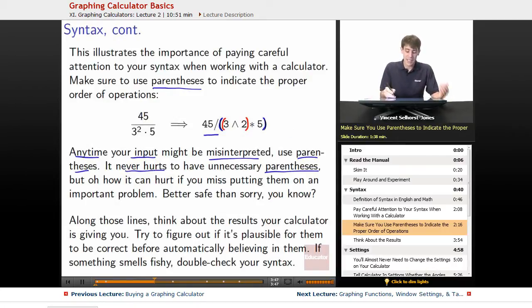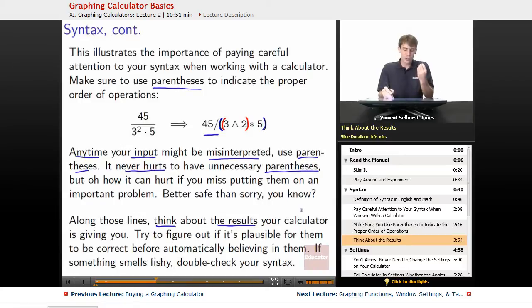So along those lines, think about the results your calculator is giving you. You don't want to just blindly assume, because my calculator told me it's got to be right. You want to try to figure out, is this plausible? Is this vaguely reasonable for me to get these numbers out of it? If we did 45 divided by 3 squared times 5, and it came out as 25, we should go, well, 45 divided by at least 9, 45 divided by something around 10, that's going to be way less than 25, so it sets off an alarm bell. We might not know what the answer is going to be beforehand, and we shouldn't. Why would we be using a calculator if we did? But we have a sense of a big ballpark range of what should we expect.